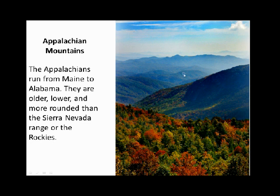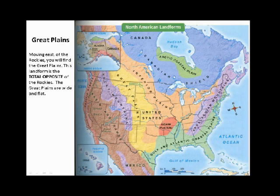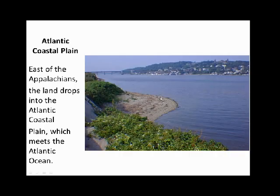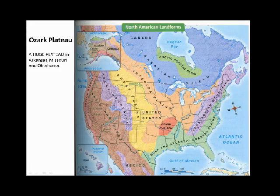The next landform that we're going to study is the Appalachian Mountains — a smaller, older, lower mountain range than the Rockies or the Sierra Nevadas in California. This kind of looks like upstate New York, and that's because the Appalachian Mountains do go into upstate New York. It stretches all the way from Maine, all the way down to Georgia and Alabama.